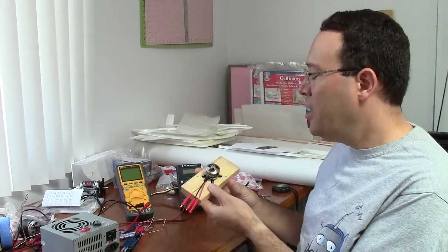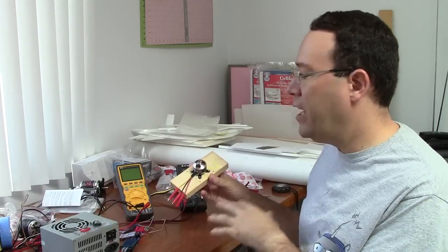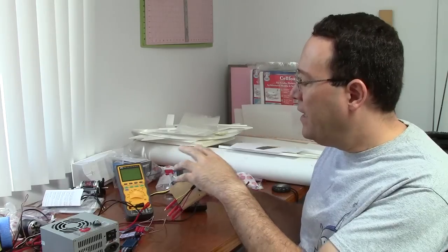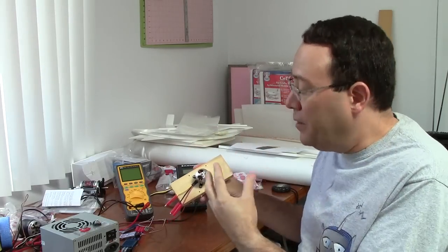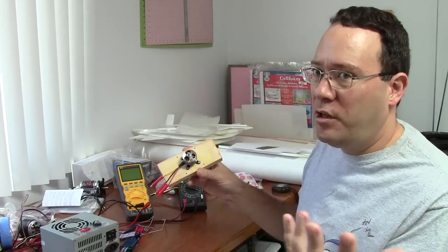When it comes to measuring the voltage constant of a brushless outrunner motor, once again there are complications because you think that you can just apply a voltage and measure the RPM and then do the division and get the voltage constant, but you can't do that because the motors have internal losses which are related to the RM and I0 which we measured before.